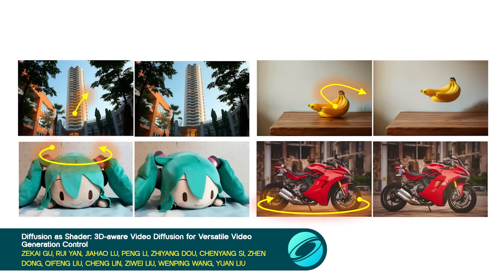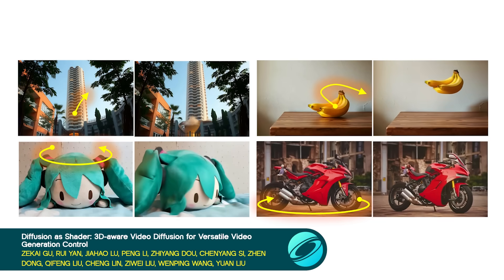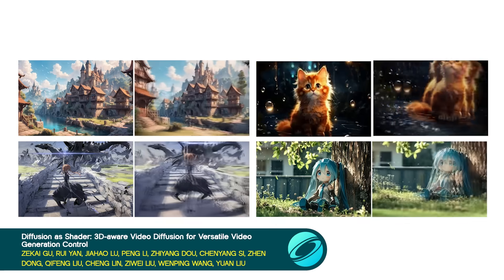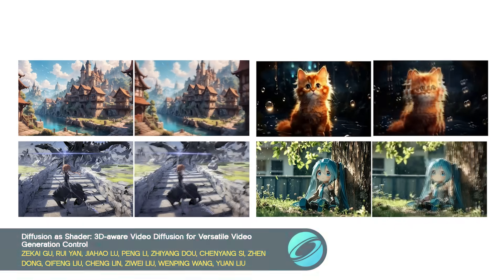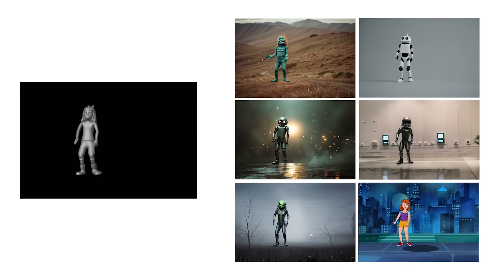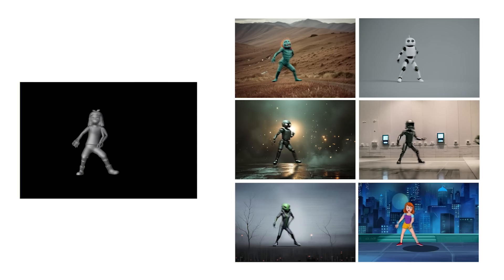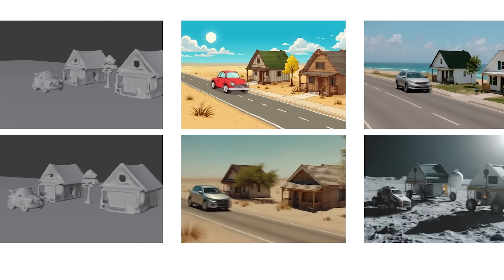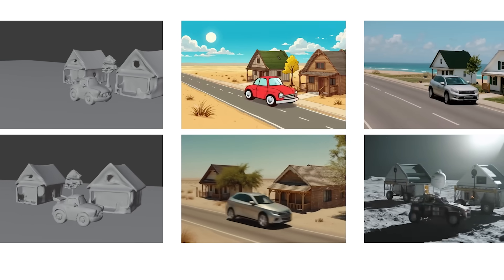Want to go beyond relighting? Diffusionist Shader generates videos by using a 3D point cloud as a diffusion model input. This allows for camera movement, mesh-to-video generation, and object editing.